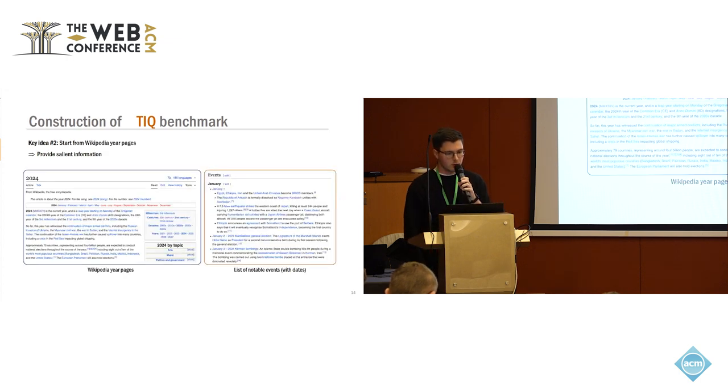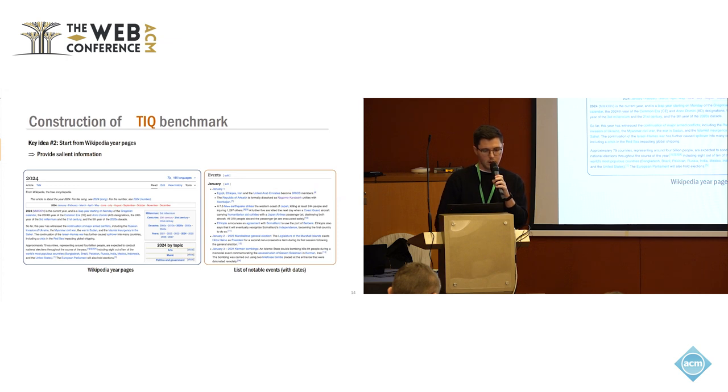The second key idea that was underlying our construction methodology was that we aim to start from Wikipedia year pages, and the intuition here is that the temporal constraint is typically something salient. You wouldn't ask about for which football club did Messi play when, I don't know, he gave an interview in Madrid or something. You would really want to provide some salient event of the entity, or also a global event like the COVID pandemic. And here, the idea was to start from Wikipedia year pages, because they actually list notable events. You can see it on the right for the year 2024, they provide the dates and a list of notable events that happened at these dates.